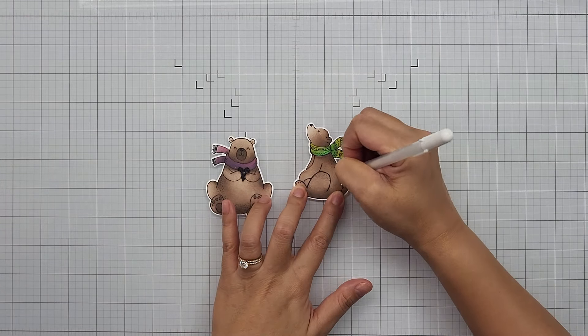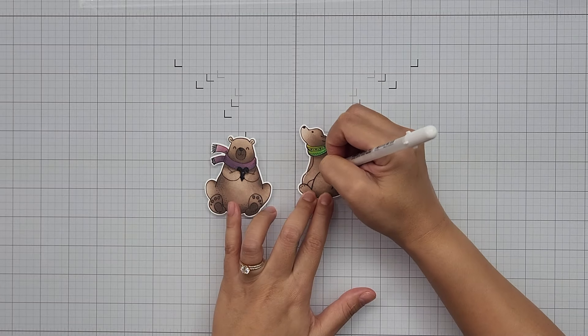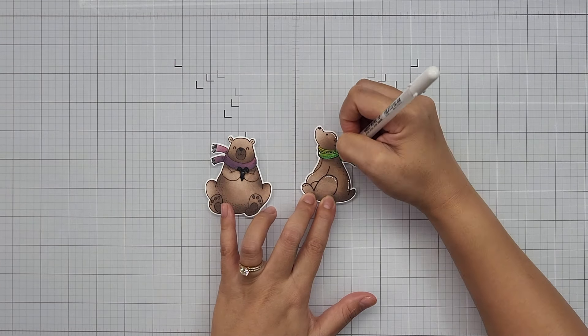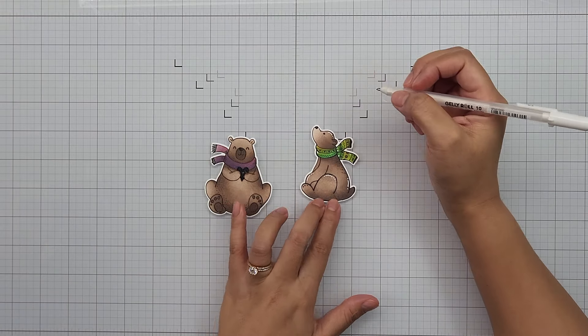Now this part is really optional, but I have always loved the way a white gel pen creates details on a colored image. I am using my Jelly Roll pen and adding dots and dash lines on the bears.